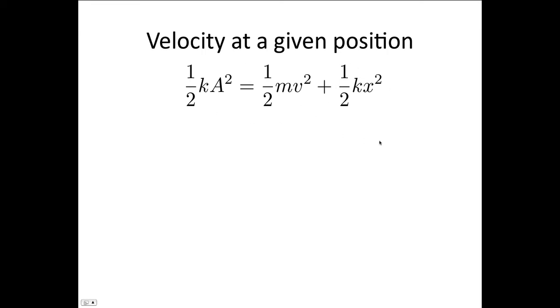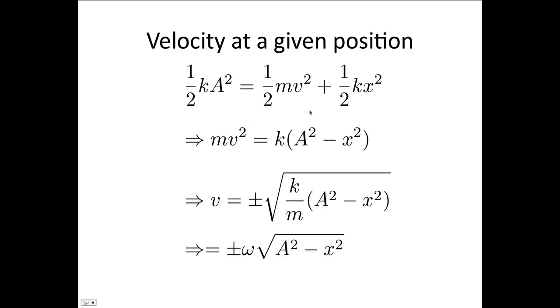So solving this, we can cancel out all the halves as a common factor, and we end up with mv squared is equal to k times (A squared minus x squared). And so dividing through by m and taking the square root, the velocity is equal to plus or minus √(k/m) √(A squared minus x squared). k/m is just ω squared, so pulling ω out the front, we've got the velocity is equal to plus or minus ω√(A squared minus x squared).